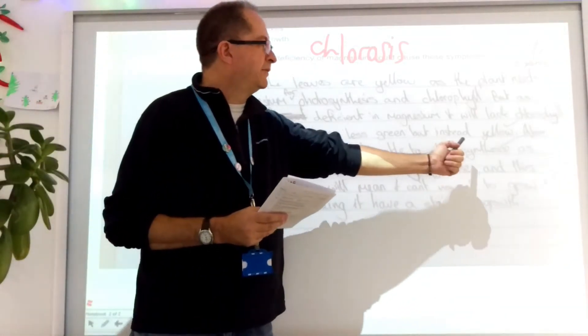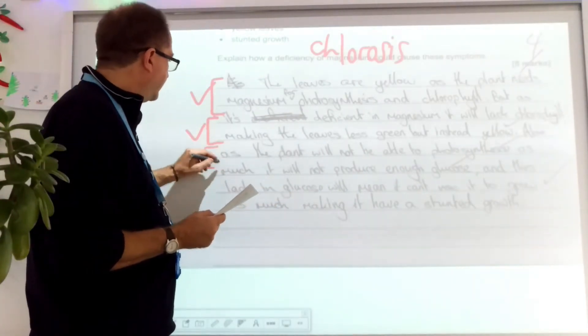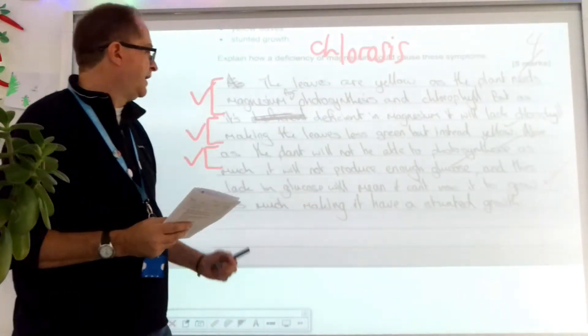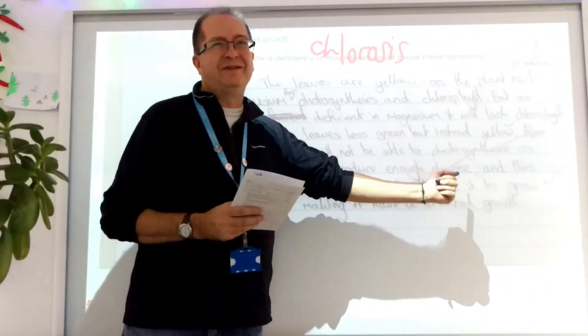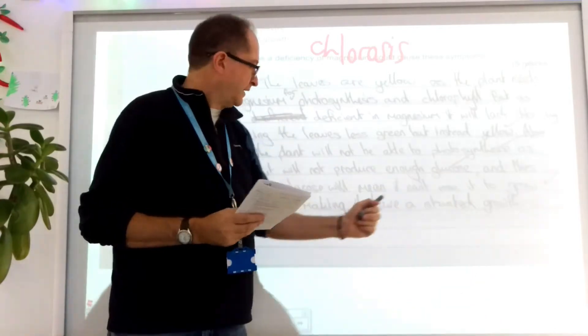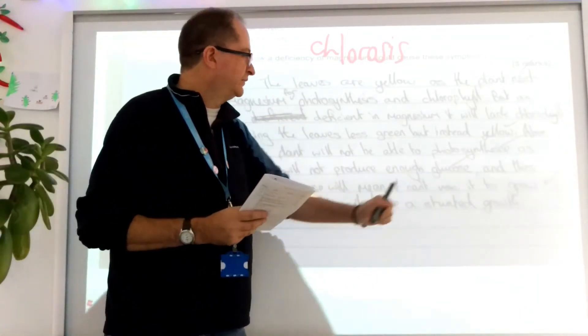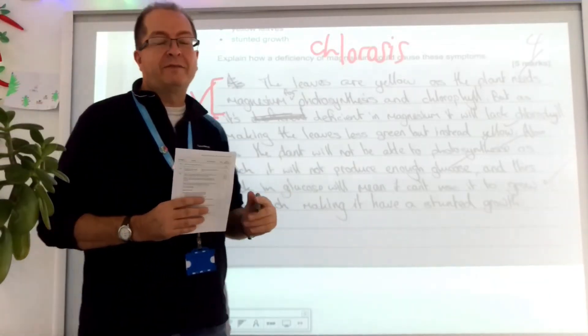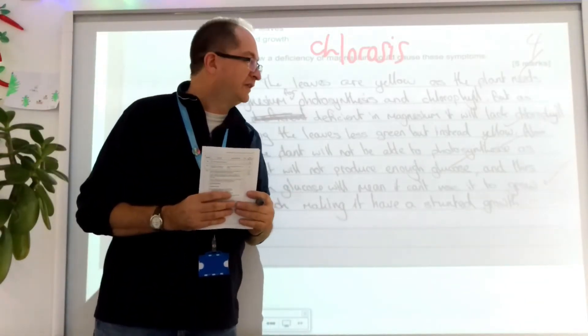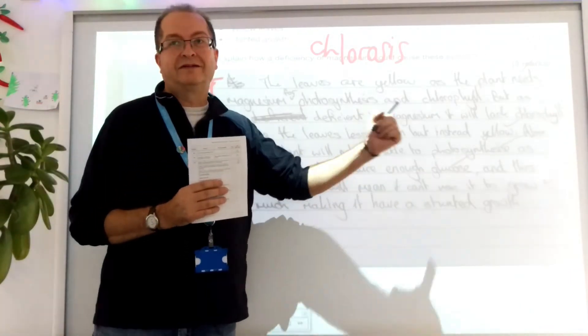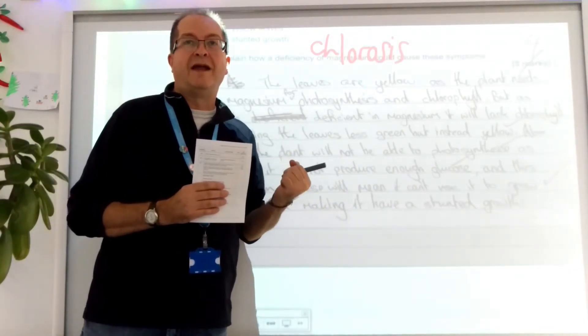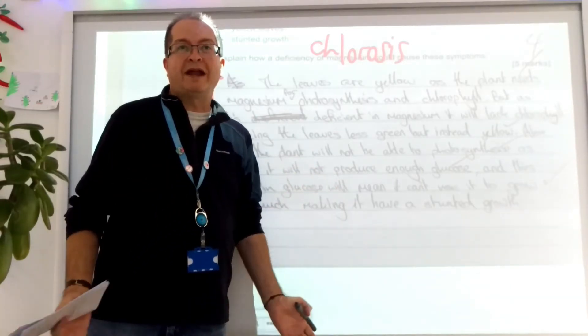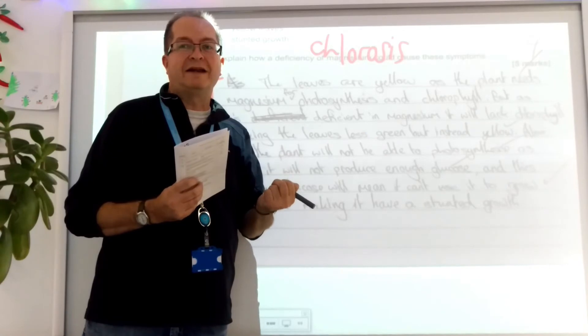The plant will not be able to photosynthesize as well. Perfect. The plant will not produce enough glucose. And this lack of glucose means it can't use it to grow. Therefore, it will have a stunted growth. So there's our four marks. They've talked about stunting. What have they missed? They've missed the key thing that glucose is converted to protein. Or glucose is needed to make protein. Remember, plants have to build everything out of glucose. Absolutely everything in them. Oils, fats, lipids, proteins, fancy carbohydrates, bark, wood, leaves, anything else.